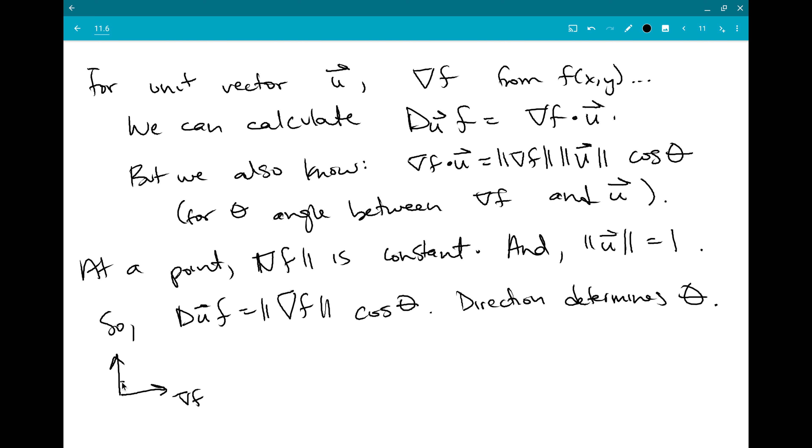If this is the direction grad f goes in, and this is the direction u goes in, their perpendicular cosine theta is 0. If grad f and u go in opposite directions, that's going to give us cosine theta equals minus 1. And if grad f and u both go in the same direction, then cosine theta is 1.